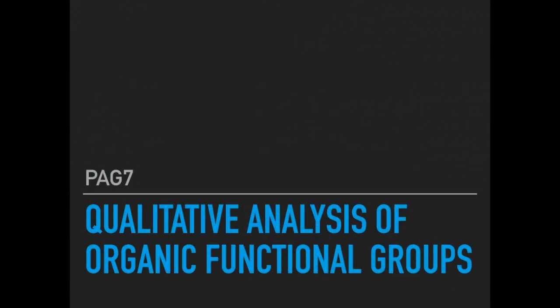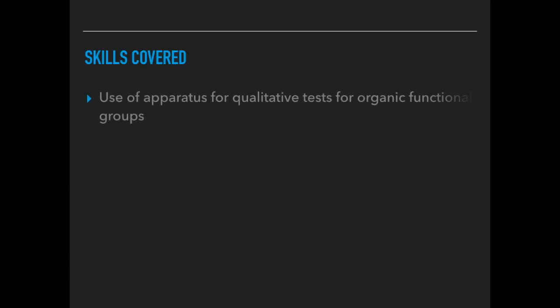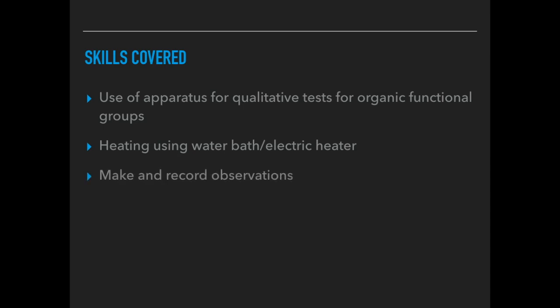In this video I'm looking at PAG 7, the Qualitative Analysis of Organic Functional Groups. The skills covered in the PAG include the use of apparatus for qualitative tests for organic functional groups, heating using a water bath or an electric heater, and the ability to make and record observations.